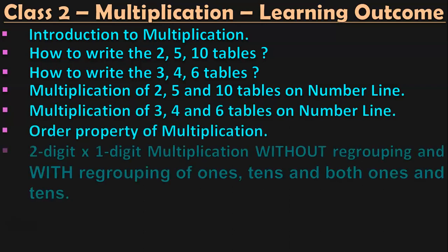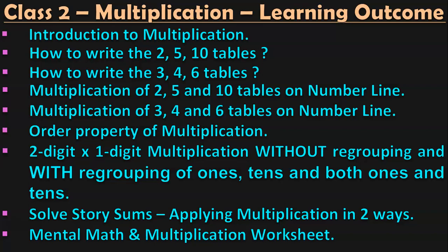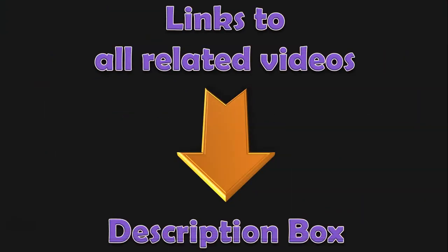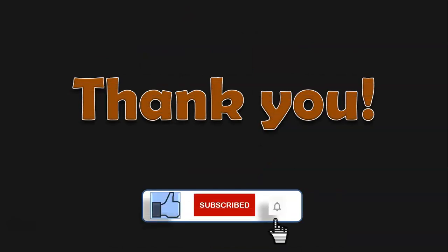Dear viewers, these are all the learning outcomes in class 2 under the topic multiplication. I have covered: introduction to multiplication; how to write the 2, 5 and 10 tables; how to write the 3, 4 and 6 tables; multiplication of 2, 5 and 10 tables on number line; multiplication of 3, 4 and 6 tables on number line; order property of multiplication; 2-digit by single-digit multiplication with and without regrouping; and now in this video, solving story sums by applying multiplication in 2 ways. In my next video, I will be covering the mental math concept and a multiplication worksheet for quick revision. Links to all related videos are given below in the description box.